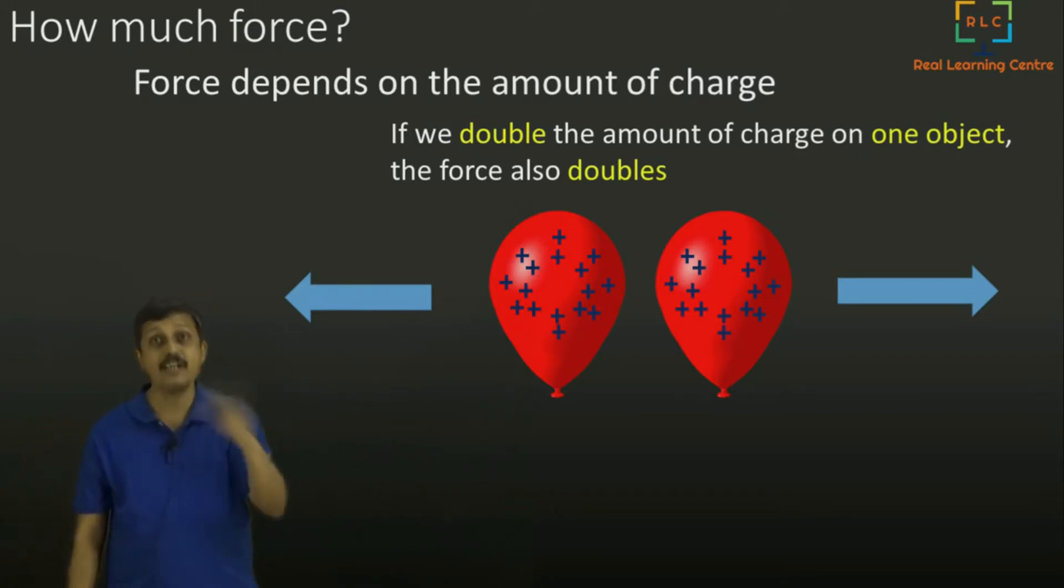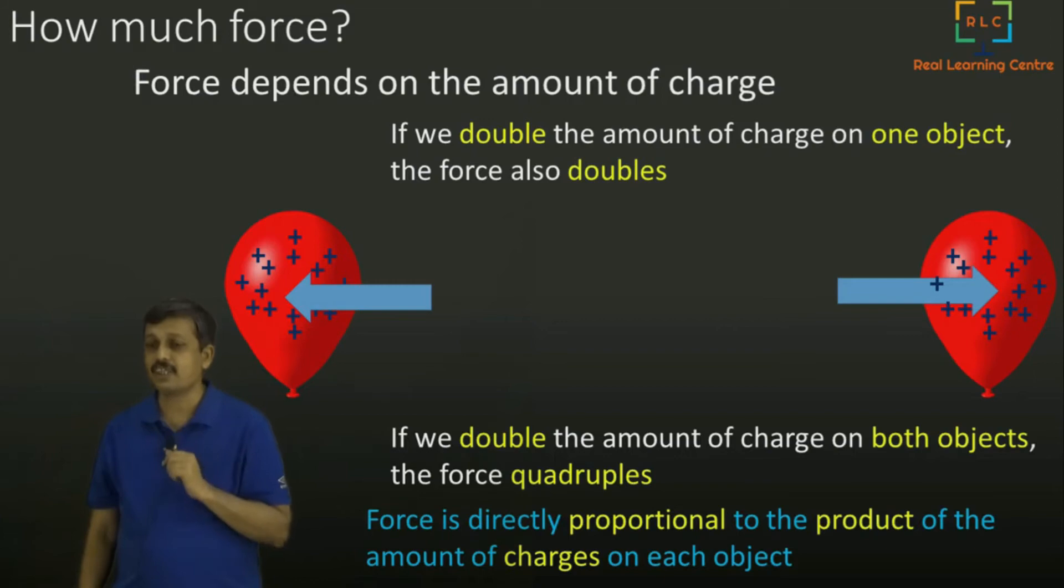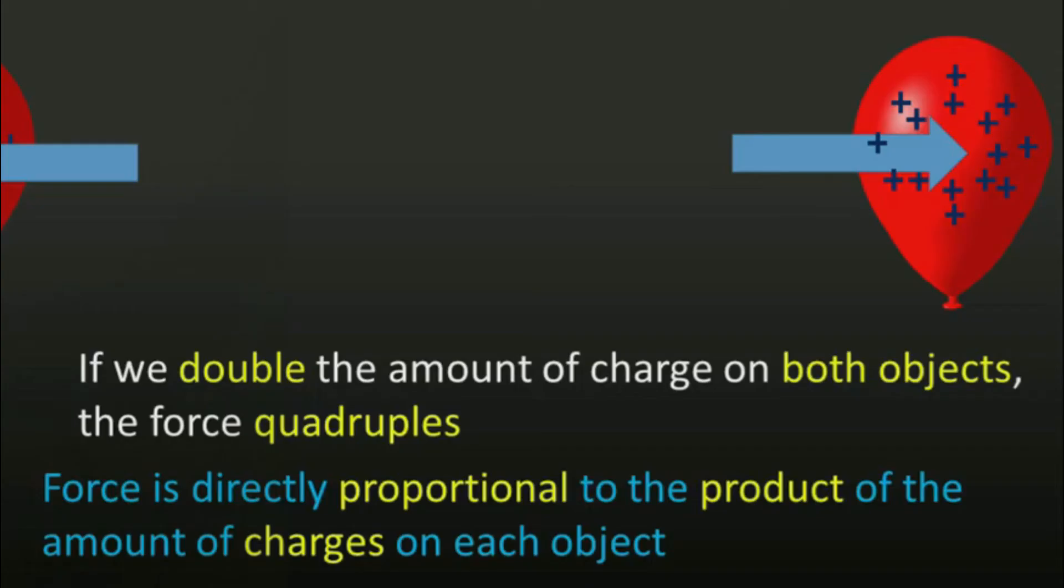Whatever already doubled, again doubled. Now what happened? They are pushed away with much more force. If we double the amount of charge on both objects, then the force quadruples. It becomes four times. So force depends on the amount of charge. We will use a word called force is proportional to the product of the amount of charges on each object.